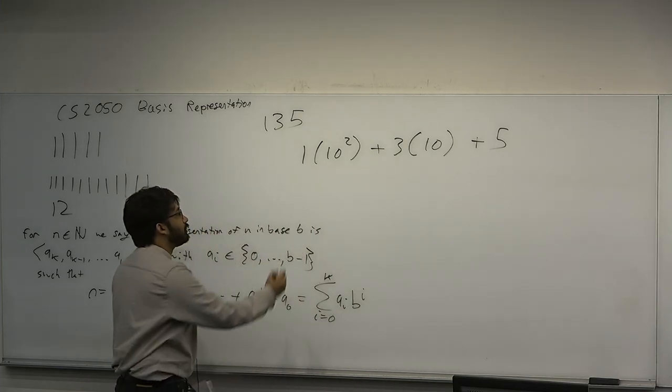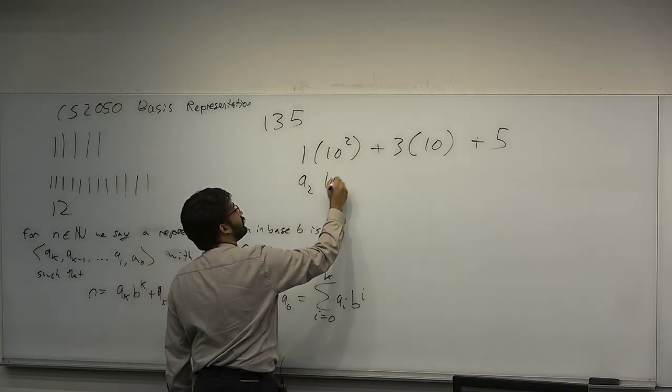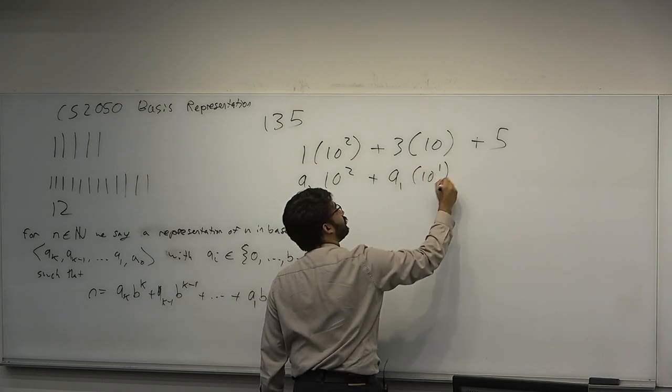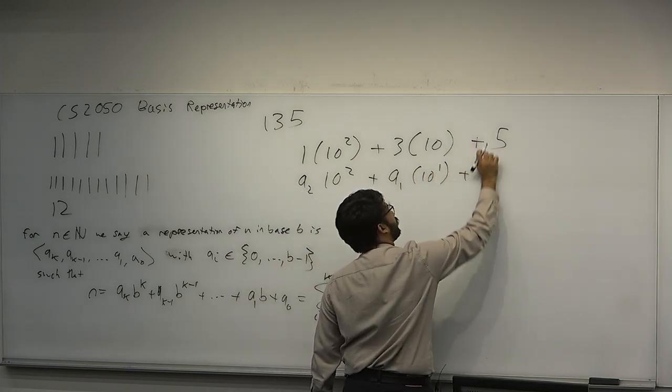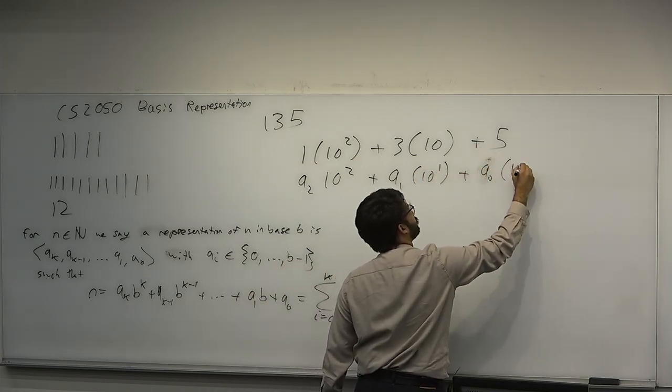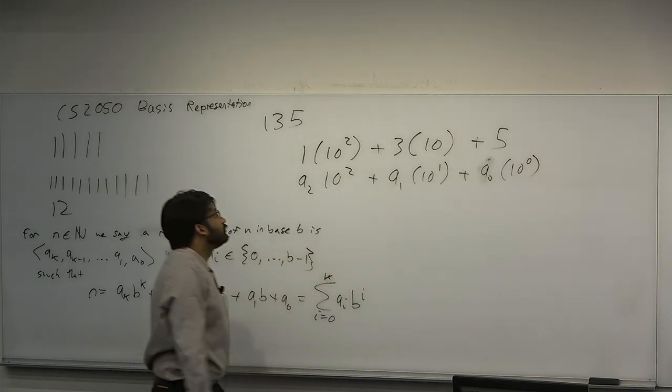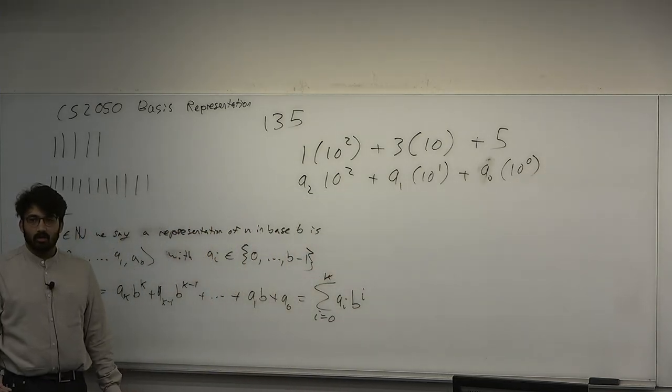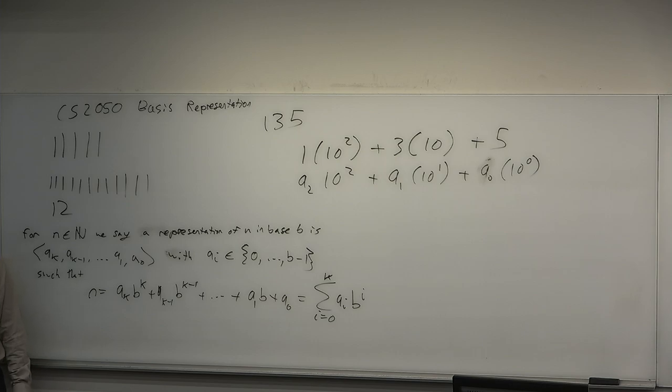But notice that this is actually, you can write this in its basic representation as 1 times 10 squared, plus 3 times 10, plus 5. So for example, this would be a_2 times 10 squared, plus a_1 times 10 to the 1, plus a_0 times 10 to the 0, which is just 1. Do you guys know why we use base 10? Like why we use base 10 and not base 2? Just like in average, everyday calculation, since the beginning of civilization, why most people use base 10?